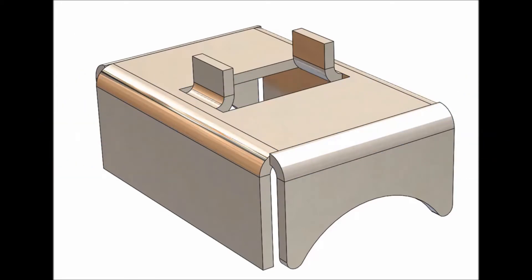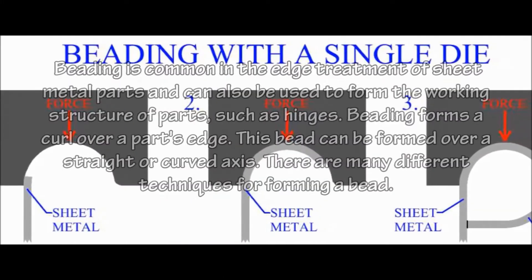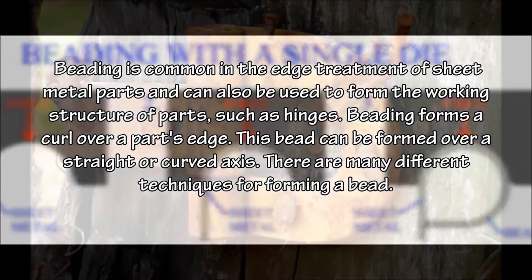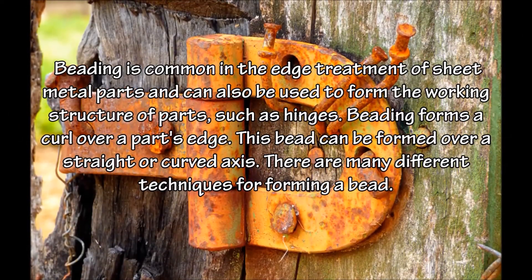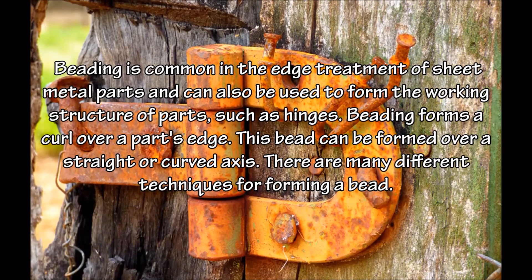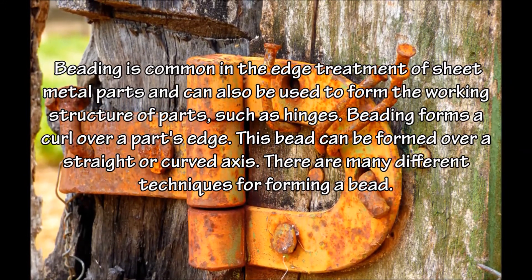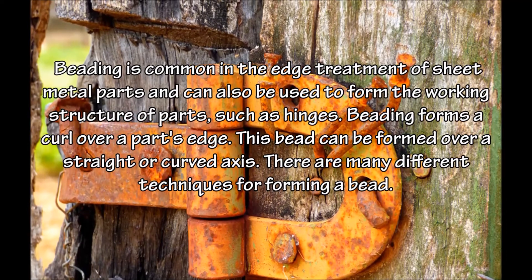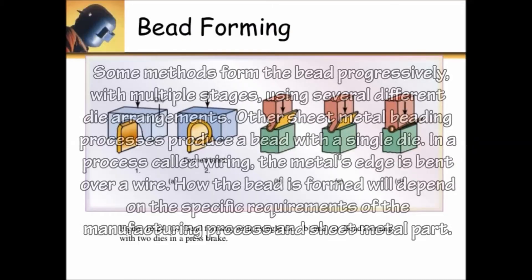Beading is common in the edge treatment of sheet metal parts and can also be used to form the working structure of parts such as hinges. Beading forms a curl over a part's edge. This bead can be formed over a straight or curved axis. There are many different techniques for forming a bead.